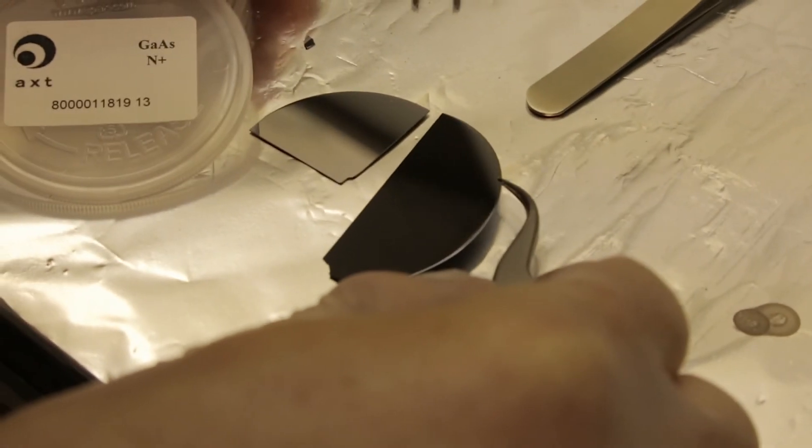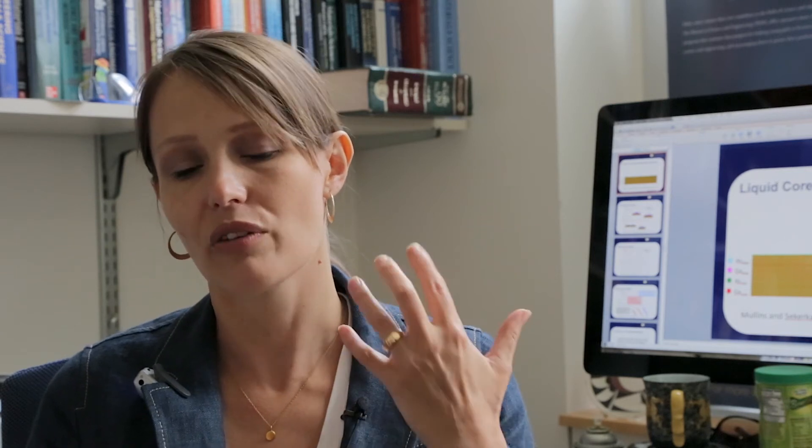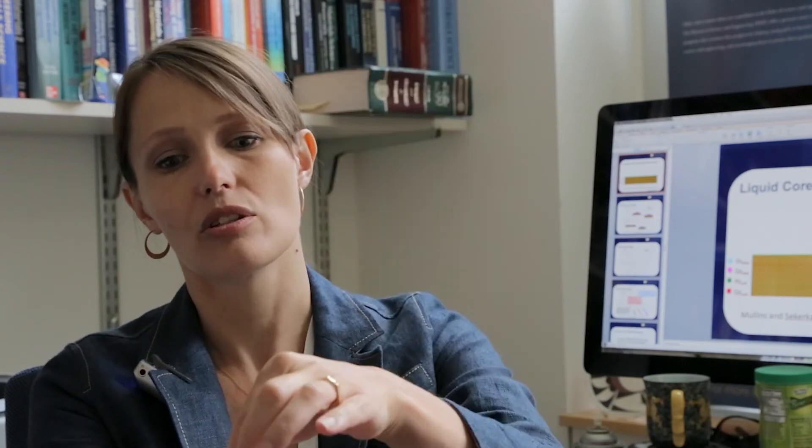So in order for the gallium and the arsenic to get together, there is some diffusion that has to take place. So now I'm going to turn it around, and gallium is coming down onto the surface. Once it gets on the surface, it can actually wander around the entire surface. And sometimes the two gallium will bump into each other and form a nucleus.